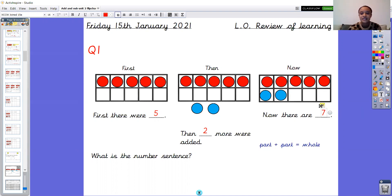And then we know that this is our part, this is our other part and this is our whole. So our number sentence is five add two equals seven. Super. Question one done.